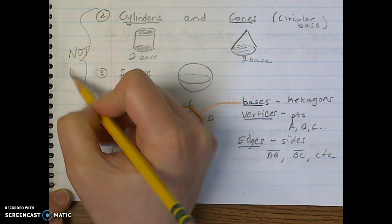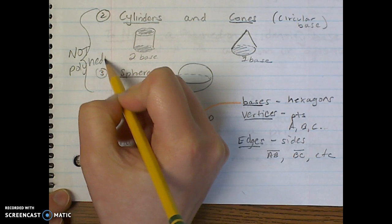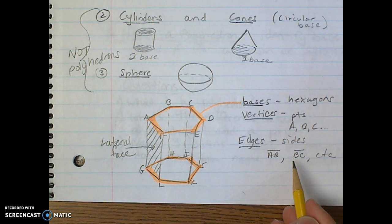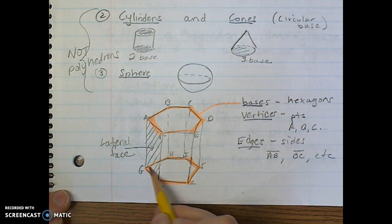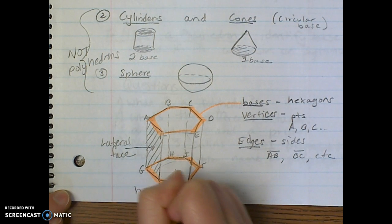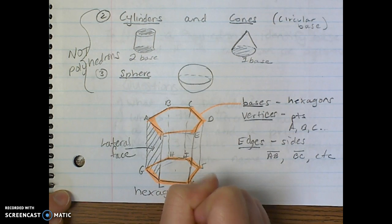Now there's more vocabulary words to describe specific parts of a polyhedron. For example, this is a hexagon and there's two bases, so this would be a hexagonal prism.